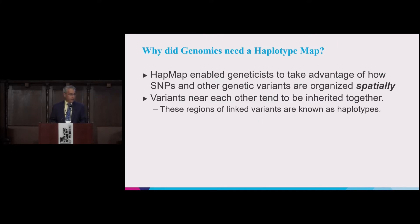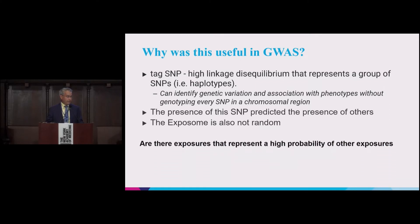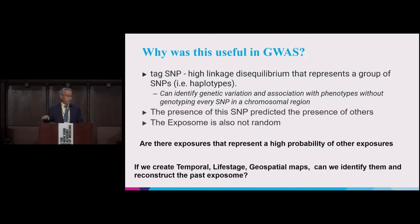Going back to the HapMap: why did genomics need a haplotype map? The HapMap enabled geneticists to take advantage of how SNPs and other genetic variants are organized spatially. Variants that are near each other tend to be inherited together — these regions are known as haplotypes. The exposome is also not random. There are exposures that tend to occur together; there are exposures that represent a high probability of other exposures. Every time you buy a product, it's a mixture of different chemicals, so you're being exposed to them simultaneously. If we were to create temporal life-stage geospatial maps, we could probably identify that covariance structure and reconstruct past exposomes by knowing it.